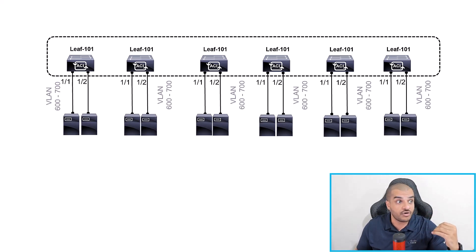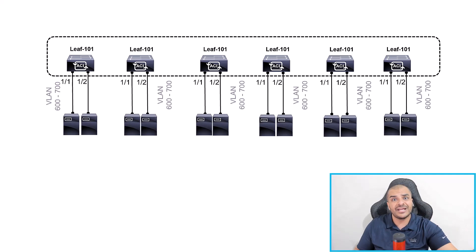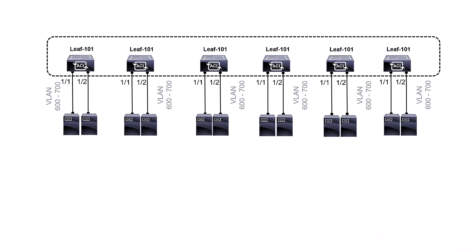Configure what is called an access policy. If you need to repeat configuration across many switches and many ports, it happens automatically as soon as you plug those servers into the interfaces. An access policy is a set of sequential, hierarchical steps that get blended together and distributed across as many ports and switches as you have in your ACI fabric. There are six steps.